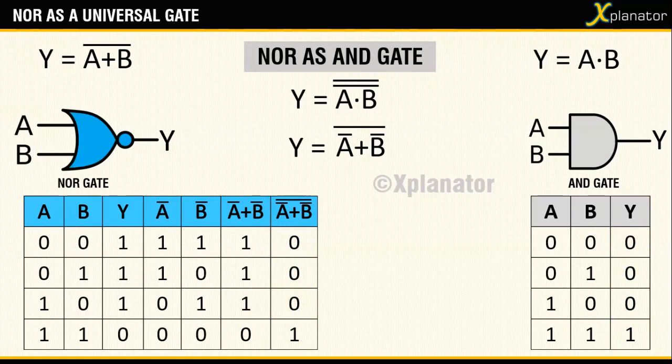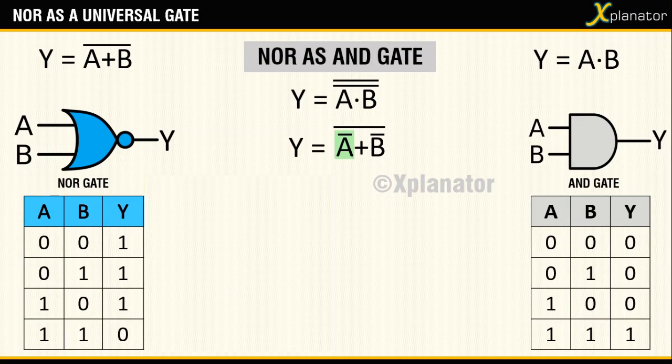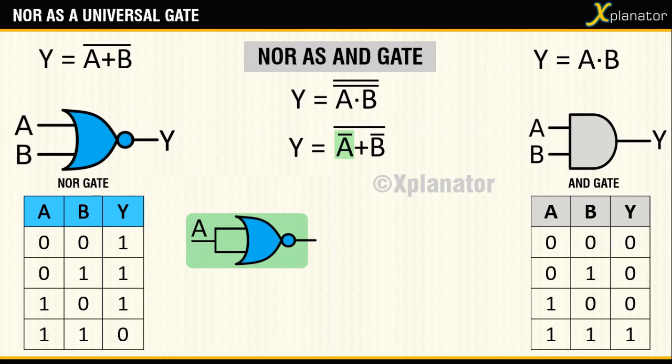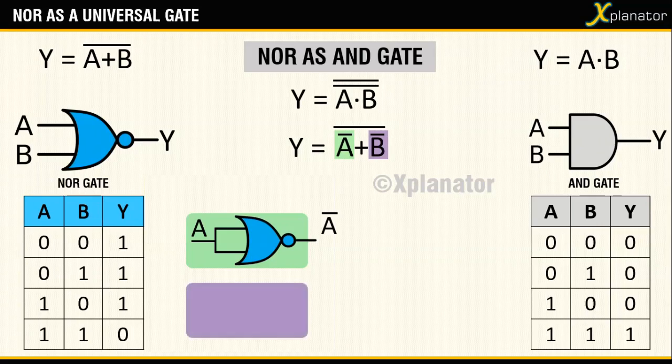To draw the same you need to draw A bar. Use the previously learned technique of using NOR as a NOT gate with input A as shown in green. Do the same for the second input, B bar shown in purple.